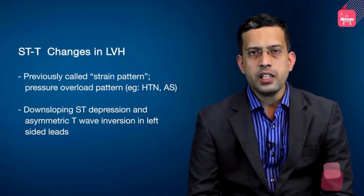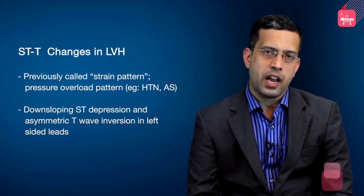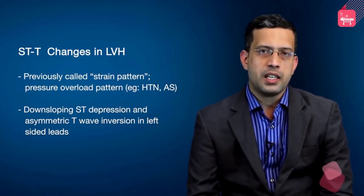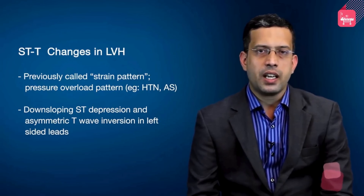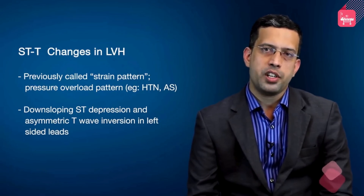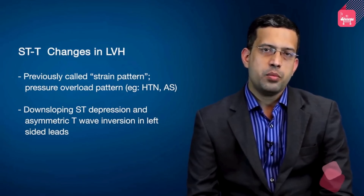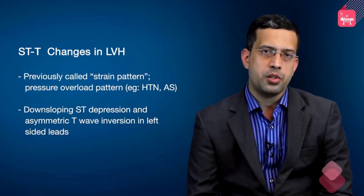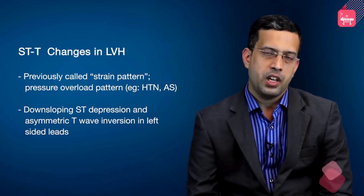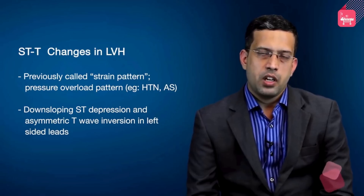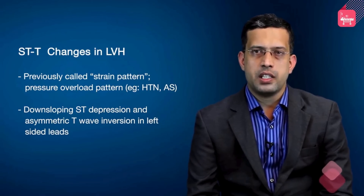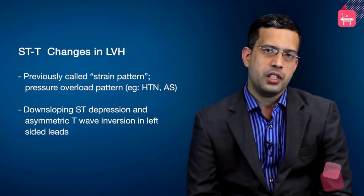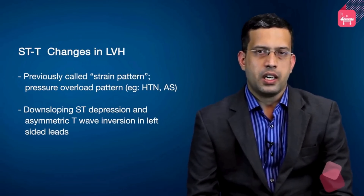Accompanying the increases in QRS amplitude, you find concomitant STT changes. These were classically labeled as the strain pattern or pressure overload pattern, terms still commonly used. This pattern involves a combination of down-sloping ST depression with asymmetric T-wave inversion in left-sided leads, classically in LVH.